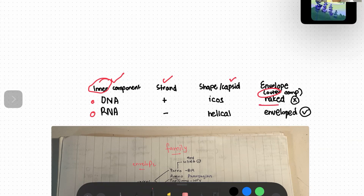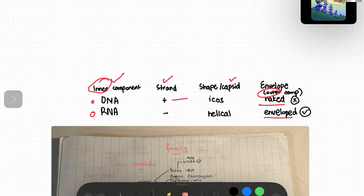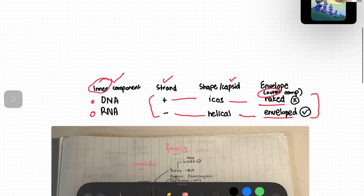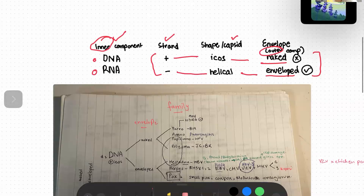If the envelope is not present, we call it naked. And if it is present, we call it enveloped. For convenience, we have this rule: icosahedral viruses are positive-stranded and naked, while helical viruses are negative-stranded and usually enveloped. So this rule goes along for convenience — we'll assume it.